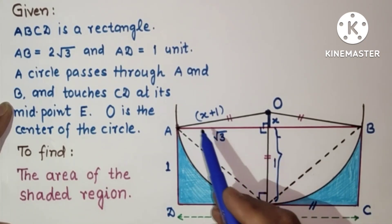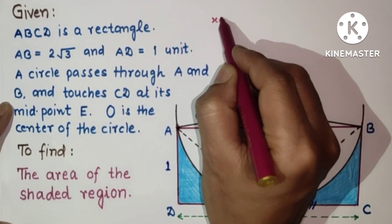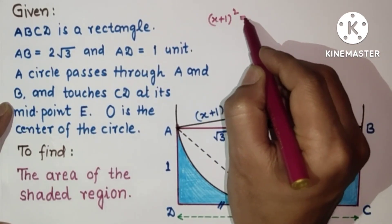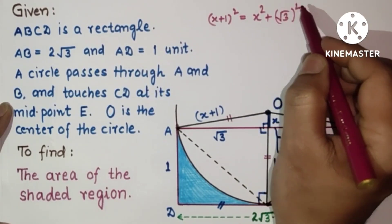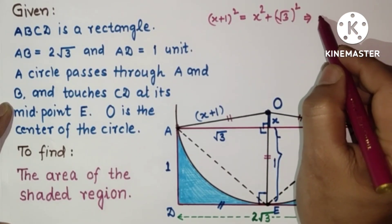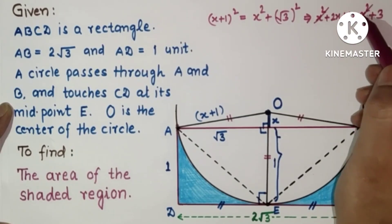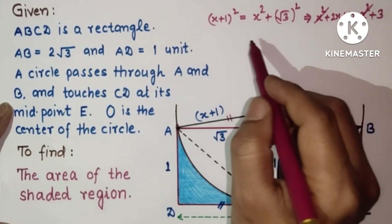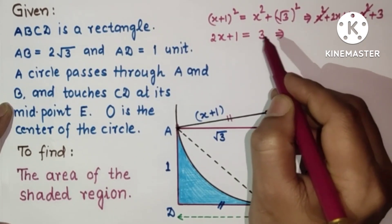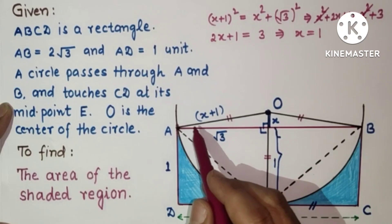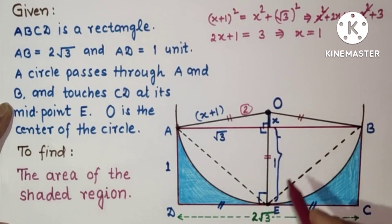Using the Pythagorean theorem: OA² = x² + OE² becomes (x+1)² = x² + (√3)², which simplifies to x² + 2x + 1 = x² + 3. The x² terms cancel, giving 2x + 1 = 3, so 2x = 2, and x = 1.